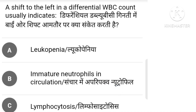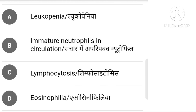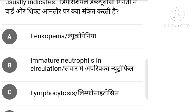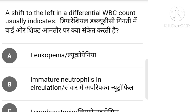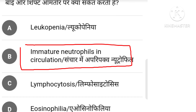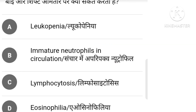A shift to the left in a differential WBC count usually indicates which of the following? Options: leukopenia, immature neutrophils in circulation, lymphocytosis, eosinophilia. The right answer is option B: immature neutrophils in circulation.